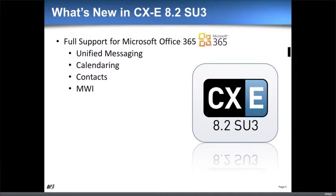That means we have full unified messaging — all the various flavors of unified messaging that we do with Exchange in-house, we also support in the cloud. And that includes access to the calendar and contacts if you have our speech recognition applications, and full control of message waiting indicators. The architecture here is our CX system sitting typically inside your enterprise, connecting to your phone system, and then using a connection out through your firewalls to the hosted center where your Office 365 works. From the point of view of deploying it, there's really no difference from what we do with Exchange 2010 today.